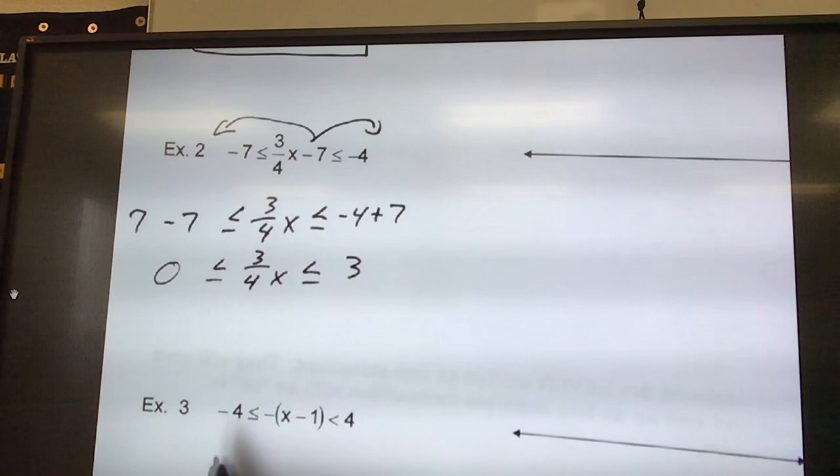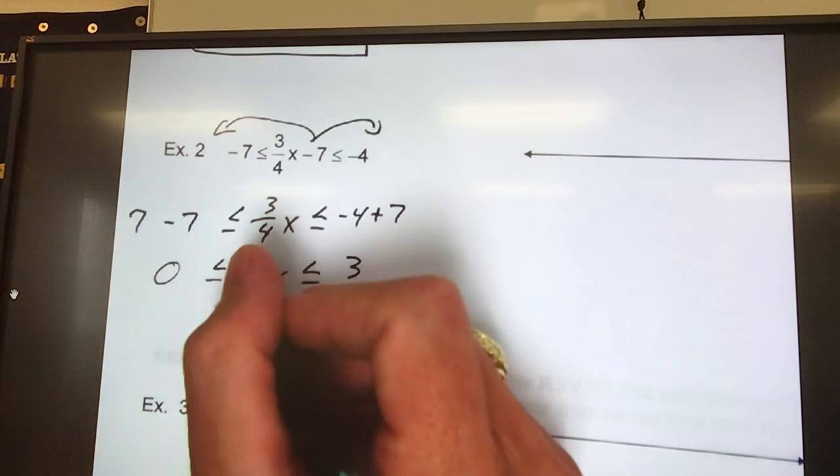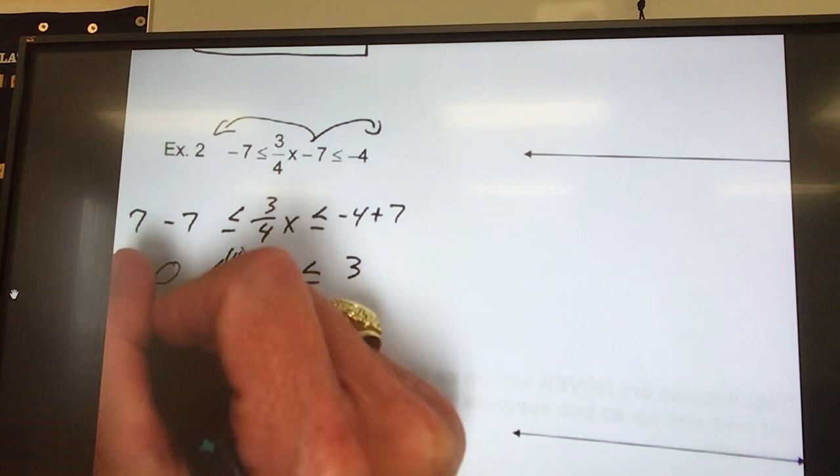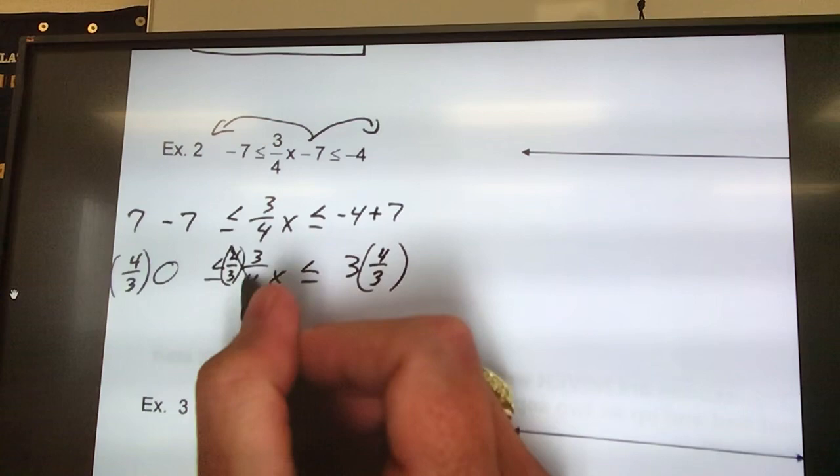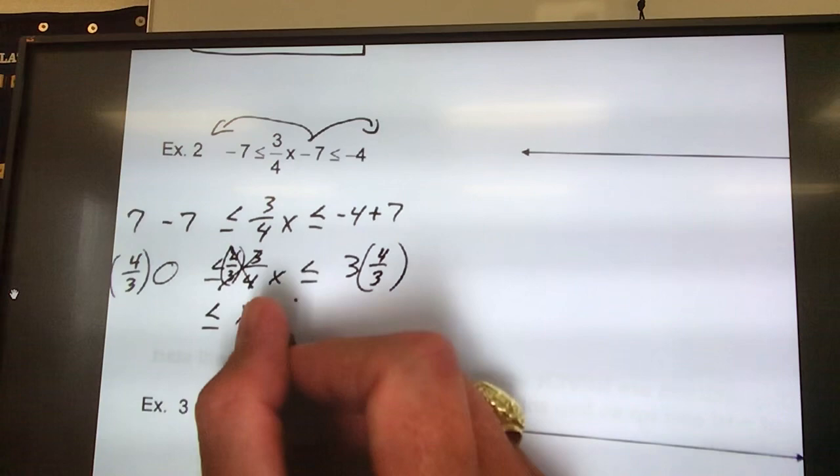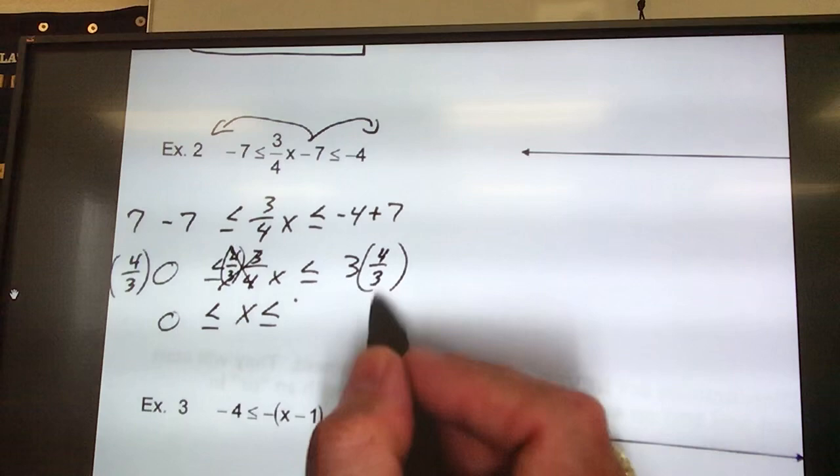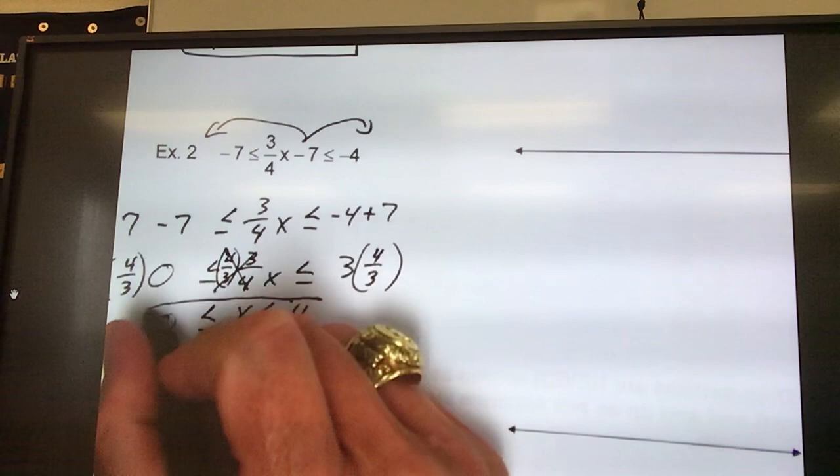Now, I want to get rid of the 3/4s. I don't want 3/4s x, I want x. So, in order to get rid of a fraction, we multiply by the reciprocal. So, I'm going to multiply by 4/3. Whatever I do to one thing, I have to do to everything else. Those cross out. The cross multiplication leaves me an x. Bring down my signs. Anything times 0 is 0. 3 times 4/3, that's 3 times 4 is 12, divided by 3 is 4.